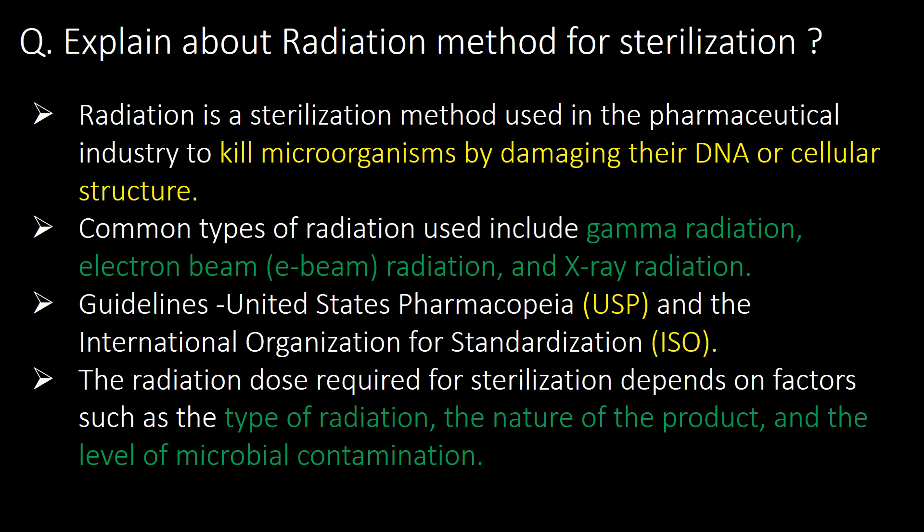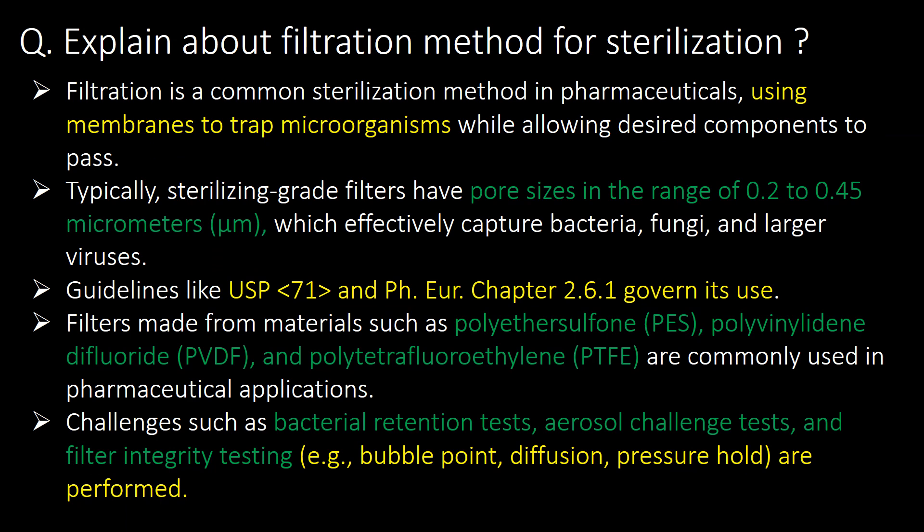Explain the radiation method for sterilization. Radiation is a sterilization method used in the pharmaceutical industry to kill microorganisms by damaging their DNA or cellular structure. Common types of radiation used include gamma radiation, electron beam radiation, and X-ray radiation. The commonly referred guidelines are the United States Pharmacopoeia (USP) and ISO guidelines. The required radiation dose depends on factors such as the type of radiation, the nature of the product, and the level of microbial contamination.